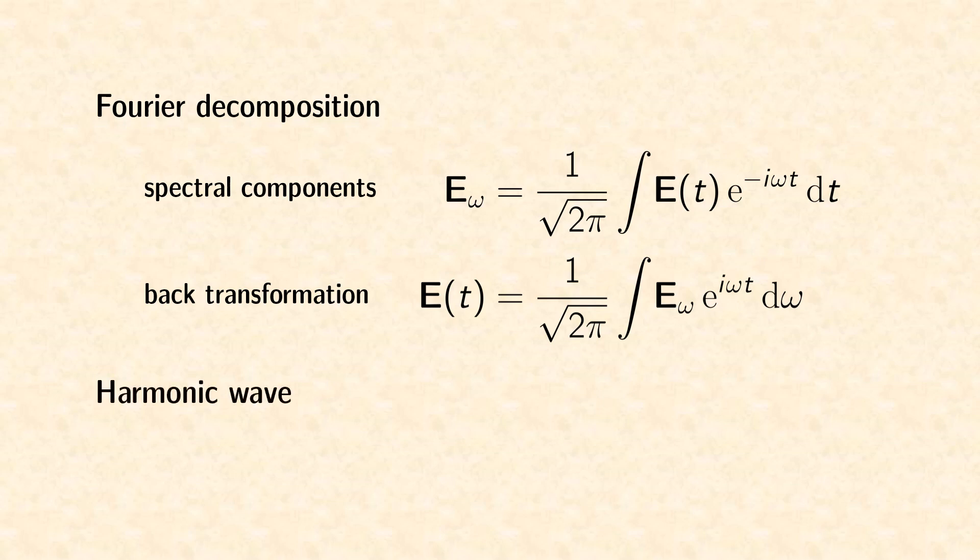Instead of sine and cosine functions, we define a harmonic wave using exponential functions with imaginary argument. The index omega is given here to highlight the connection to the above Fourier transform. In practice, it is usually omitted.